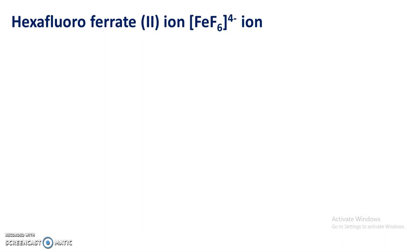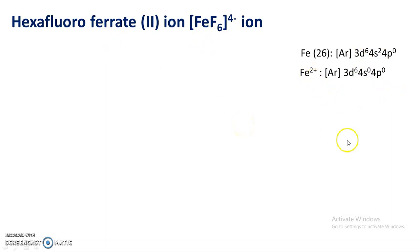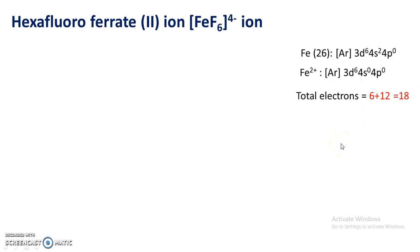The next complex is hexafluoroferrate(II) ion, that is [FeF₆]⁴⁻. Again, iron is the central atom with electronic configuration Ar 3d⁶ 4s² 4p⁰. In this complex, the oxidation state of iron is +2, so the configuration of Fe²⁺ is Ar 3d⁶ 4s⁰ 4p⁰ — formed by loss of 2 electrons. Altogether there are 18 electrons: 6 from the metal ion and 12 from the 6 ligands.